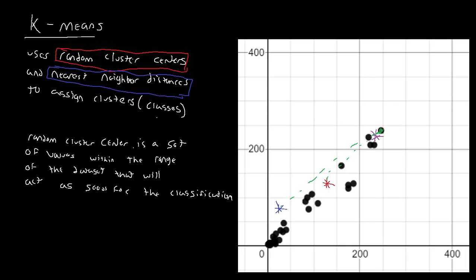So then we would initially say that this pixel right here is actually purple. I drew it green — that was a poor choice — because it's closest. Its nearest neighbor distance puts it closest to this cluster center, which is purple.